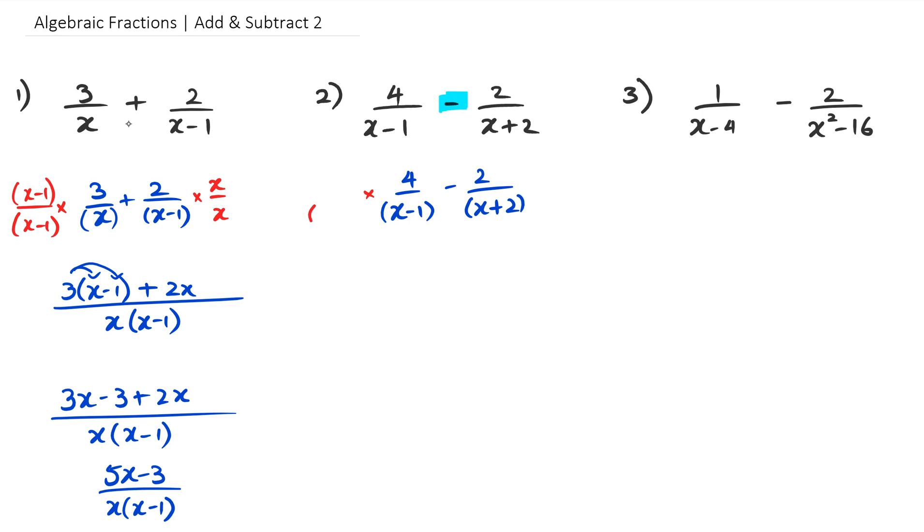So what we've got here is 4 over x minus 1 minus 2 over x plus 2. So in the denominator for the left-hand side I need to multiply by x plus 2 and also the numerator by x plus 2. And on the right-hand side I've got to multiply by x minus 1 and also x minus 1 in the numerator. So now what I tend to do is I put the x plus 2 and x minus 1 as one common denominator, so I can leave it as x plus 2 multiplied by x minus 1.